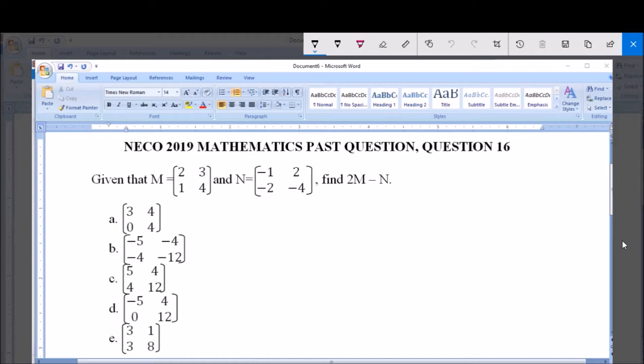The options are: A, matrix of 3, 0, 4, 4. B, matrix of minus 5, minus 4, minus 4, and minus 12. C, 5, 4, 4, 12. D, minus 5, 0, 4, 12. And E, 3, 3, 1, 8.